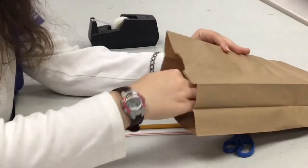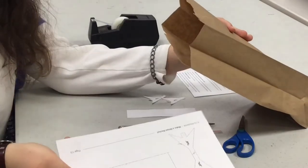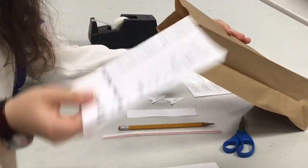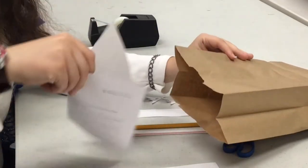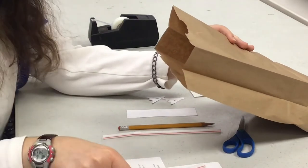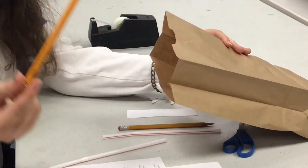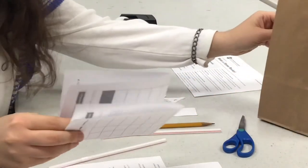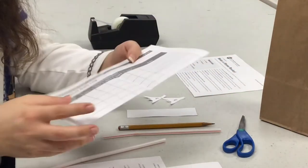So this is the straw rocket kit. In your kit, you will have the template for the straw rocket, instructions for how to make the straw rocket, the straw for your rocket, a pencil to make your rocket with, and if you want, you don't have to fill this out, a data log.